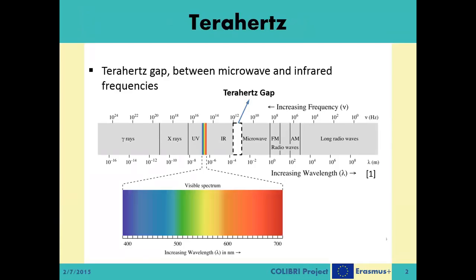Terahertz waves fall between the microwaves and the infrared light waves. They have a wavelength between 100 micrometers to 1 millimeter and frequencies between 0.3 to 3 terahertz. This region, called the terahertz gap, represents an area in the electromagnetic spectrum where the frequency of electromagnetic radiation becomes too high to be measured digitally via electronic counters. Therefore, the frequency must be measured by proxy using the properties of wavelength and energy. Similarly, the generation and modulation of coherent electromagnetic signals in this frequency range becomes much harder, while conventional electronic devices use generated radio waves and microwaves.